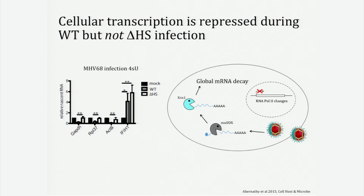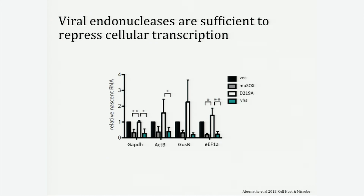Could we take out the complexity of the virus and see something similar just by transfecting in the host shutoff factors? We transfected in wild-type Musox and saw a significant decrease in nascent mRNA levels, but not when we transfect in the catalytic mutant D219A. We were also able to transfect in a non-homologous endonuclease from alpha herpesviruses, VHS, and see this same transcriptional repression, suggesting that this is a conserved phenotype.